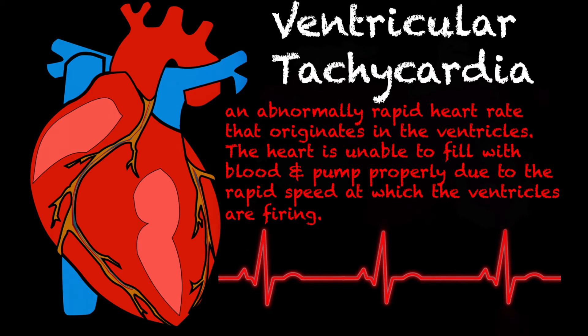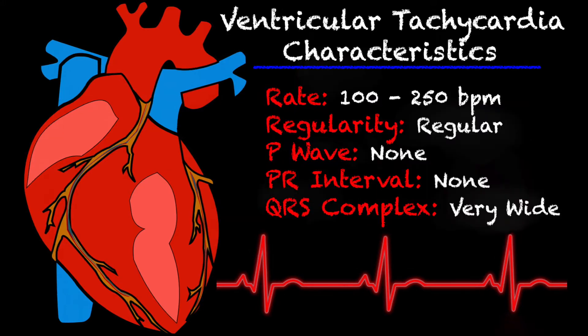Ventricular tachycardia is defined as an abnormally rapid heart rate that originates in the ventricles, or the bottom of the heart. The heart is unable to fill with blood and pump properly due to the rapid speed at which the ventricles are firing. It should be noted that three or more PVCs, or premature ventricular contractions, constitutes a run of ventricular tachycardia.